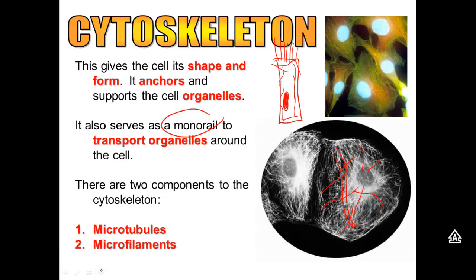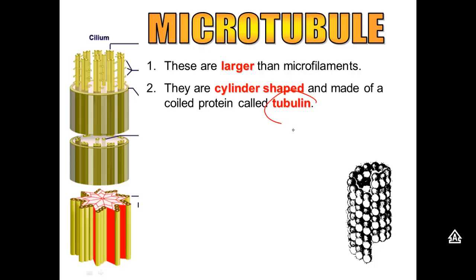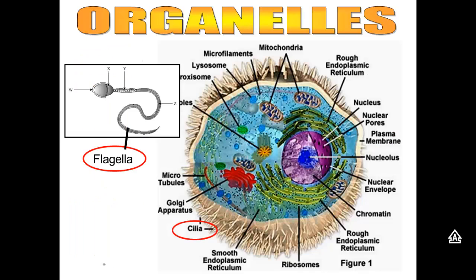There are two parts to the cytoskeleton: microtubules and microfilaments. Microtubules are bigger than microfilaments — they're shaped like cylinders and made of proteins called tubulin. It's microtubules that make cilia, the tiny hairs inside our lungs and other places in the body. They also make flagella, as we see on sperm, and they make centrioles, which help to move the chromosomes around during mitosis.